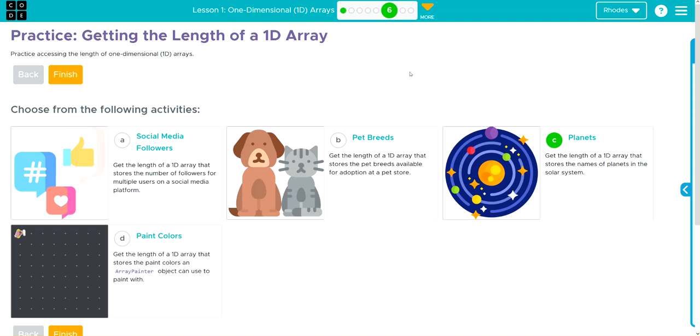Hey kids, welcome to Unit 3 Lesson 1, one-dimensional arrays, exercise number 6. We have a choose your own adventure. I love my pets. We're going to go ahead and do B, pet breeds.